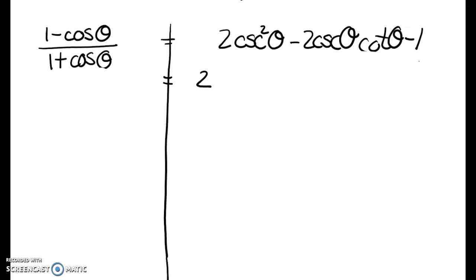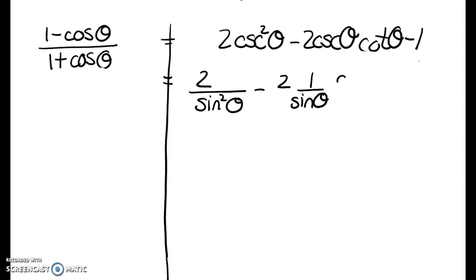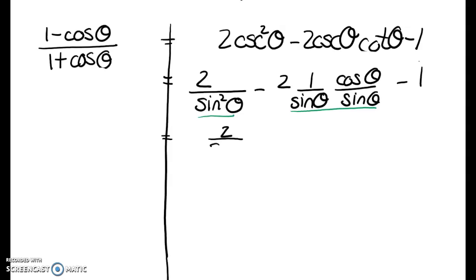So cosecant is 1 over sine, and cotangent is cosine over sine minus 1. If you take a look, this denominator and this denominator is sine squared. So I'm going to change the 1 to have the same denominator as sine squared so that we can combine everything into one fraction — I just think it makes sense to try and do that.